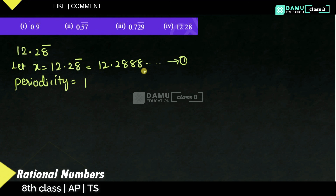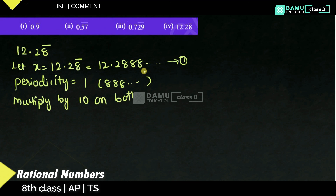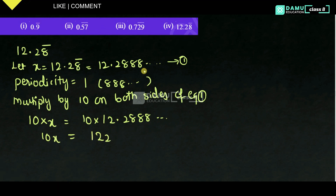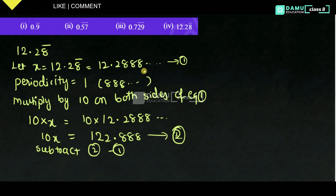Only 1 is repeating, so multiply by 10 on both sides of equation 1. 10 into x will be equal to 10 into 12.2888... Then 10x will be equal to 122.888... Let this be equation 2.